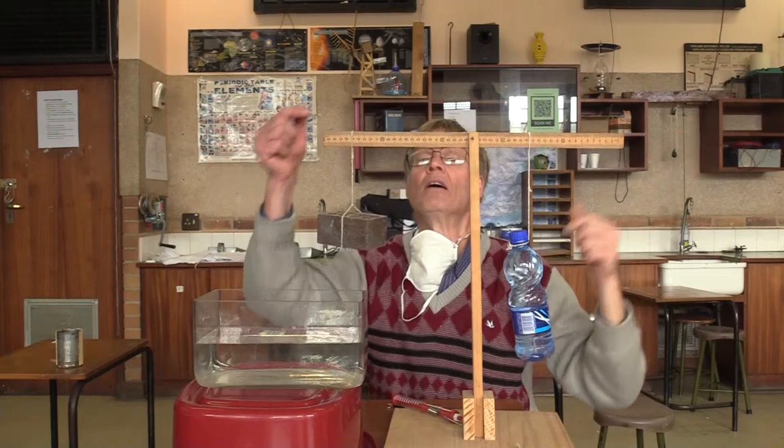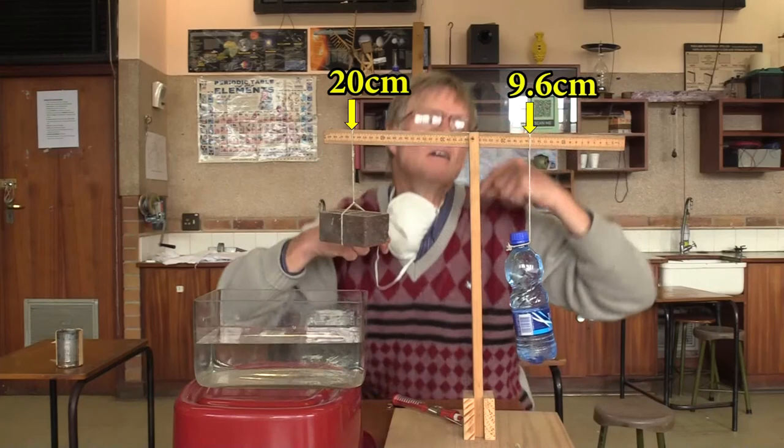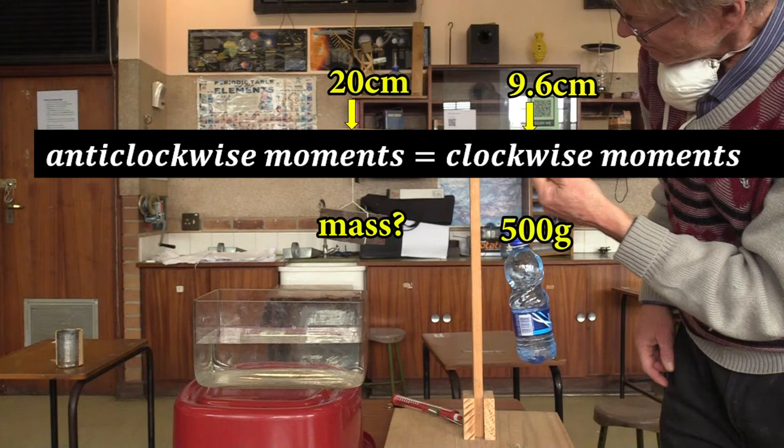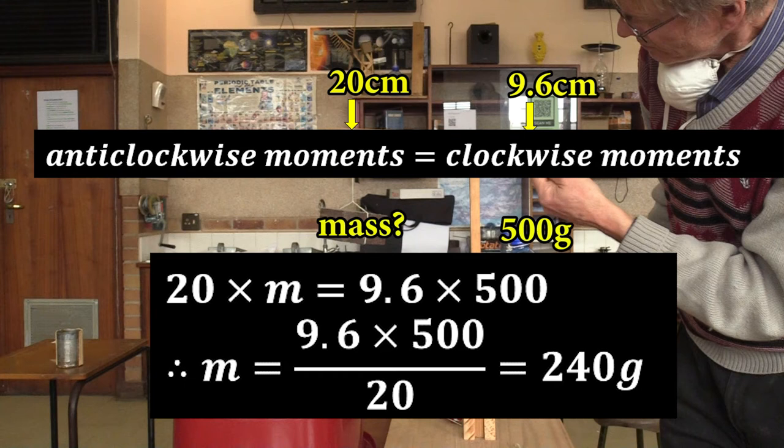Now we measure. That's 5, 10, 15, 20 centimeters. And that turns out to be 9.6 centimeters. Now the anti-clockwise moments equal the clockwise moments. So 20 times the unknown mass is 9.6 times 500 grams. And solving that we get 240 grams for the block.